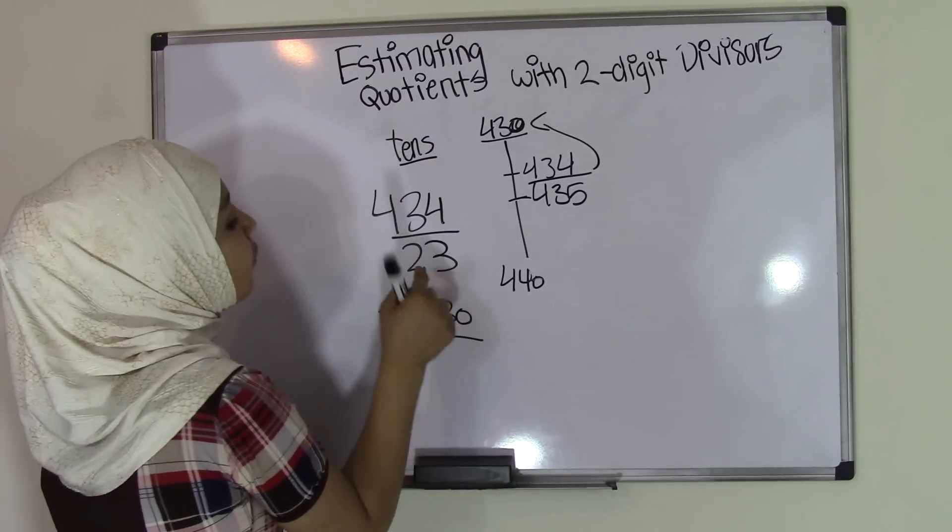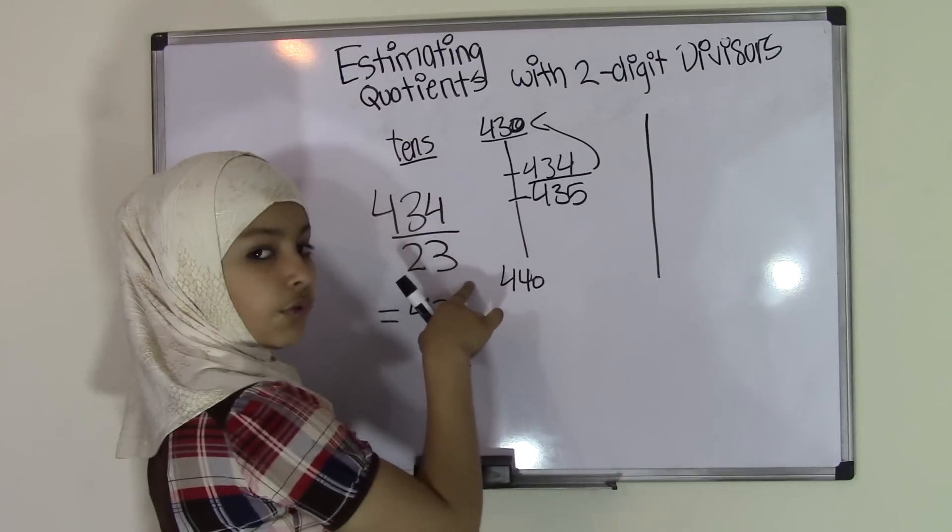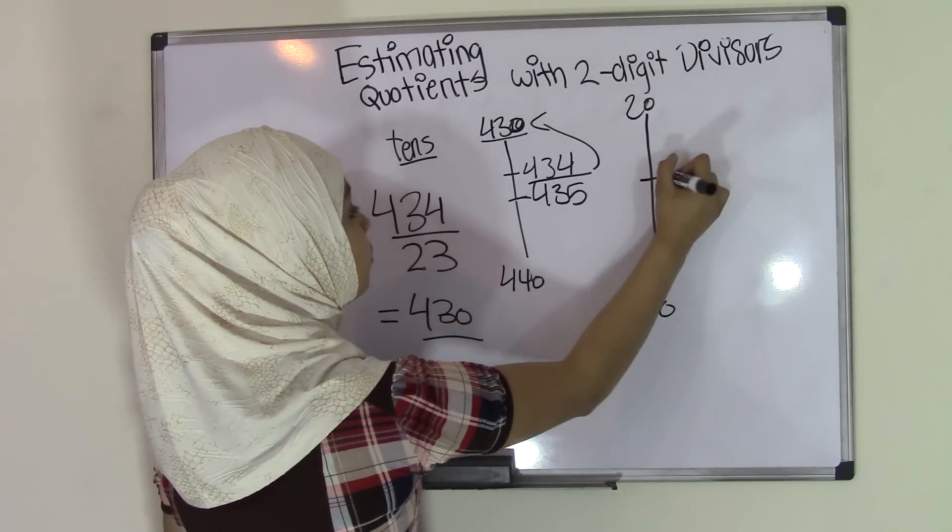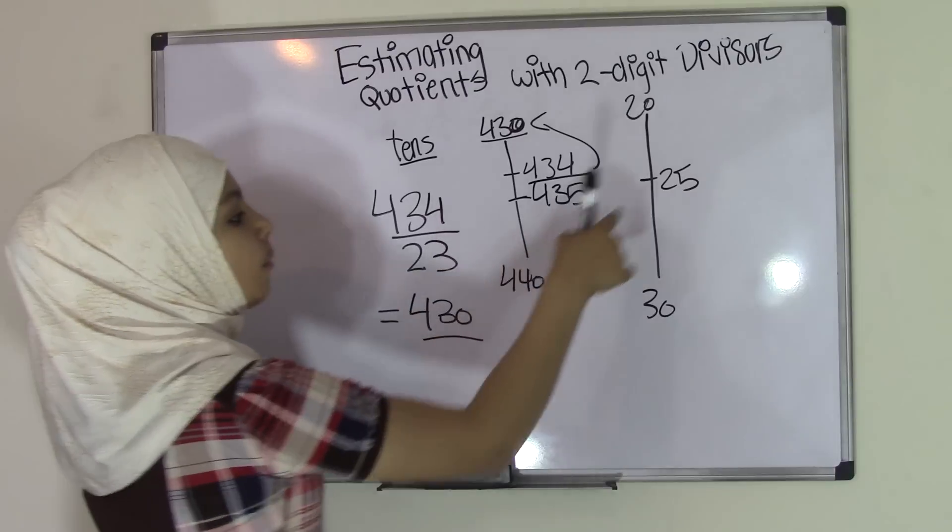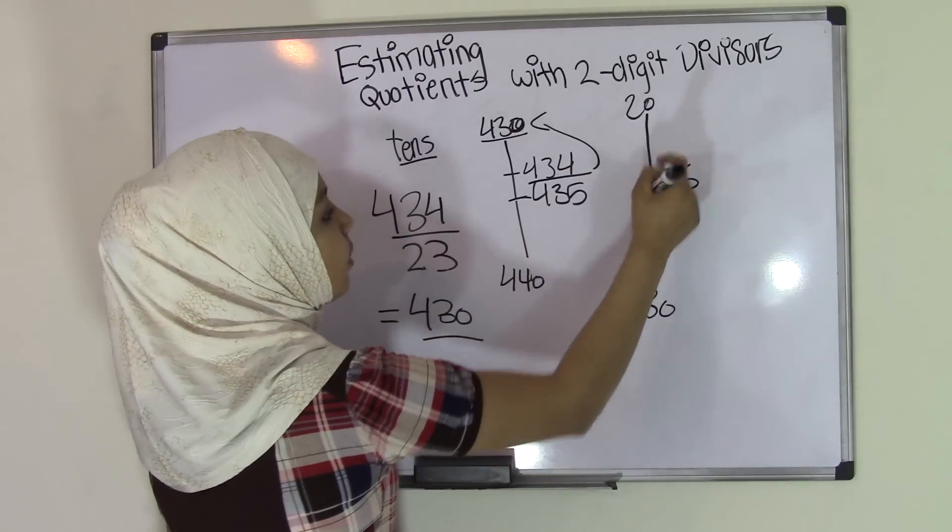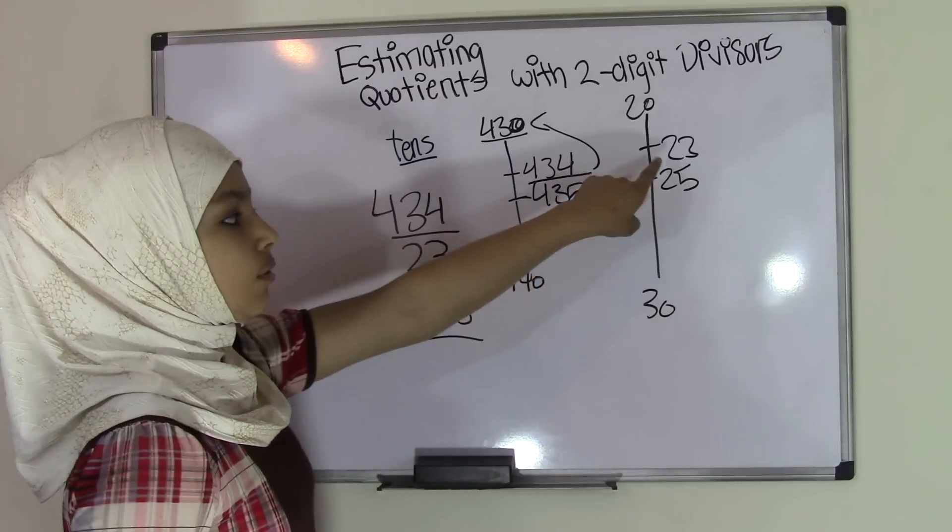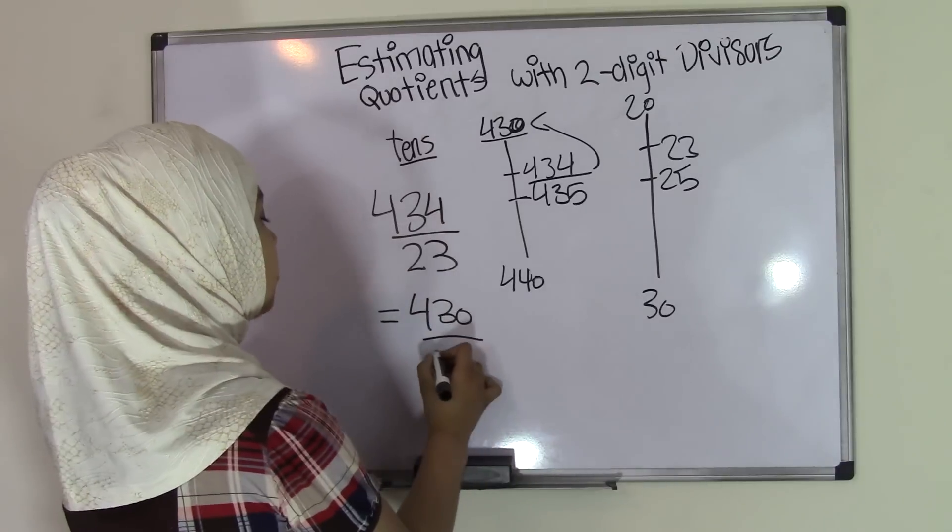Now we're going to do the same thing for 23. The nearest tenths for 23 will be 20 and 30. In the middle will be 25. 23 should be somewhere around here because 23 is less than 25. This tells us that 23 is going to be closer to 20, so we will round this to 20.